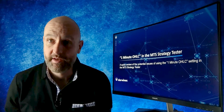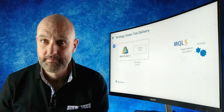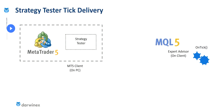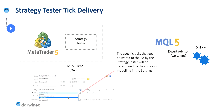Let me explain why that is. Just some quick background. The option that you see in the strategy tester is what determines which specific ticks will get delivered to your expert advisor by the strategy tester.